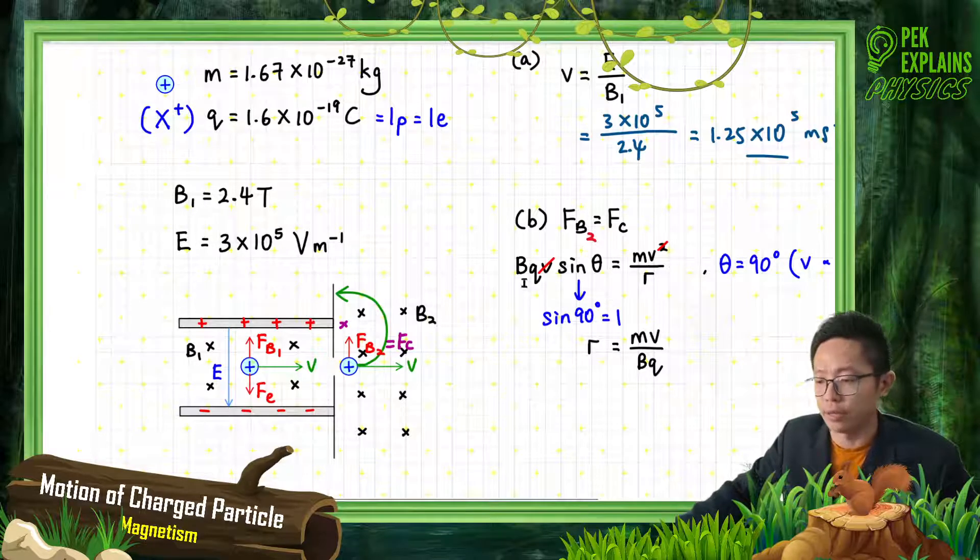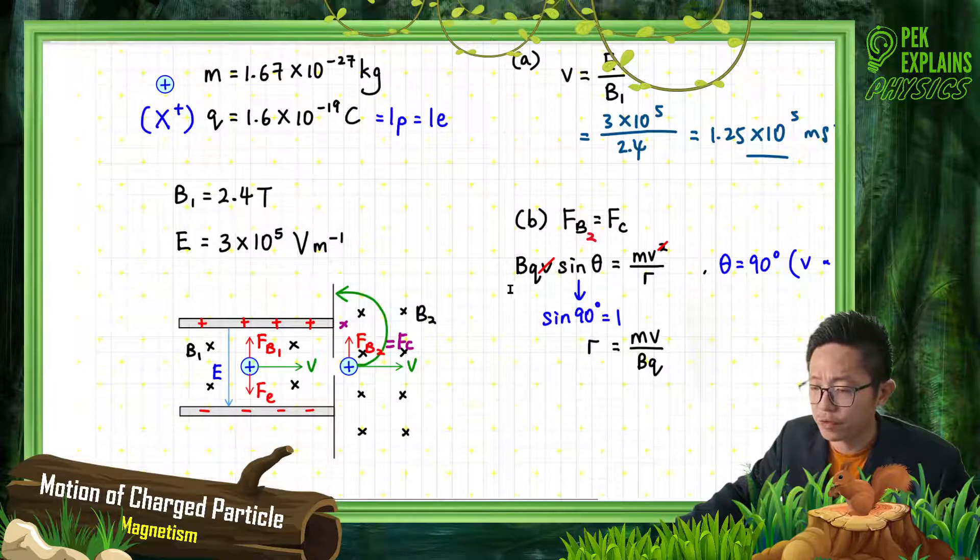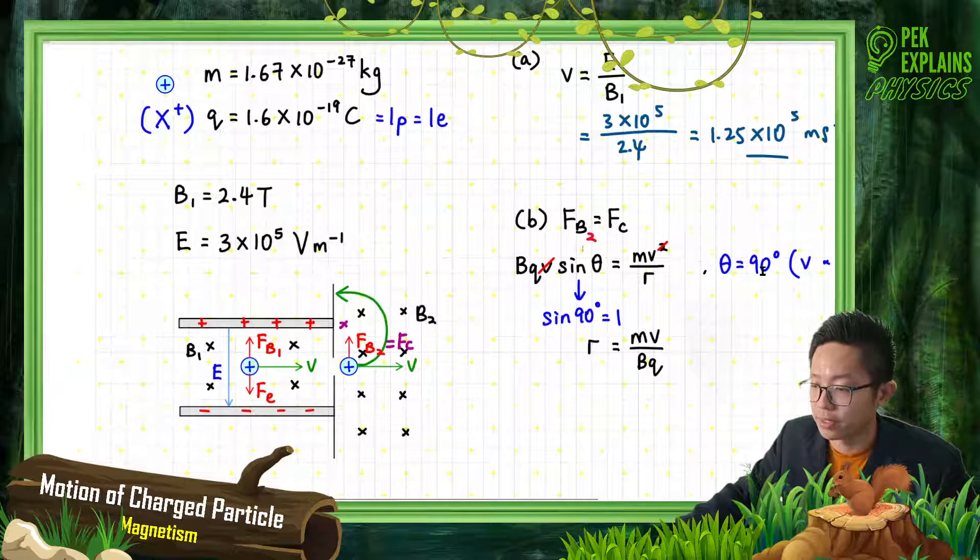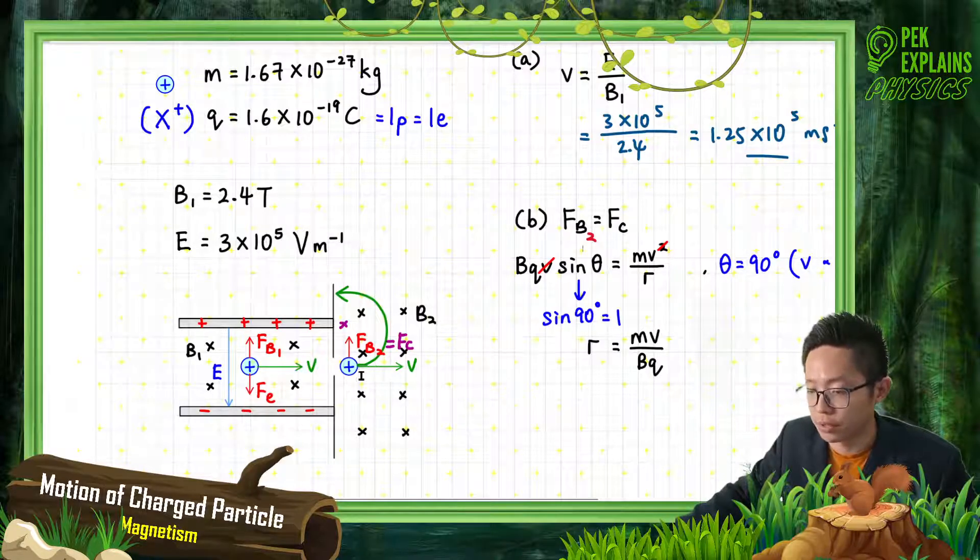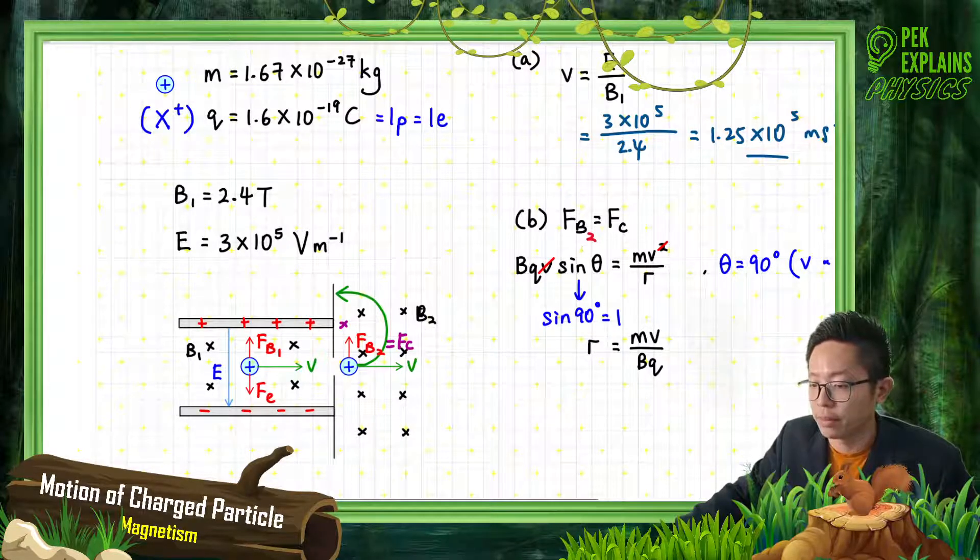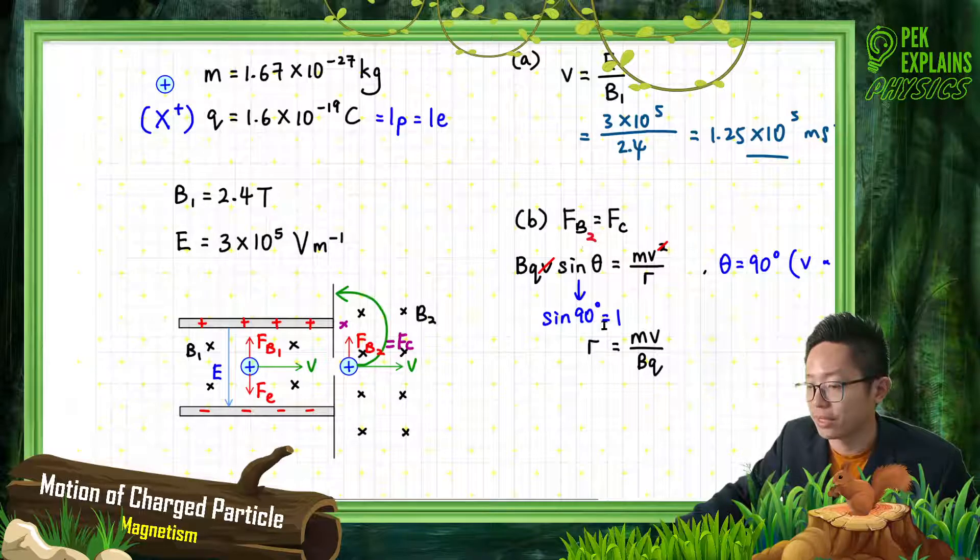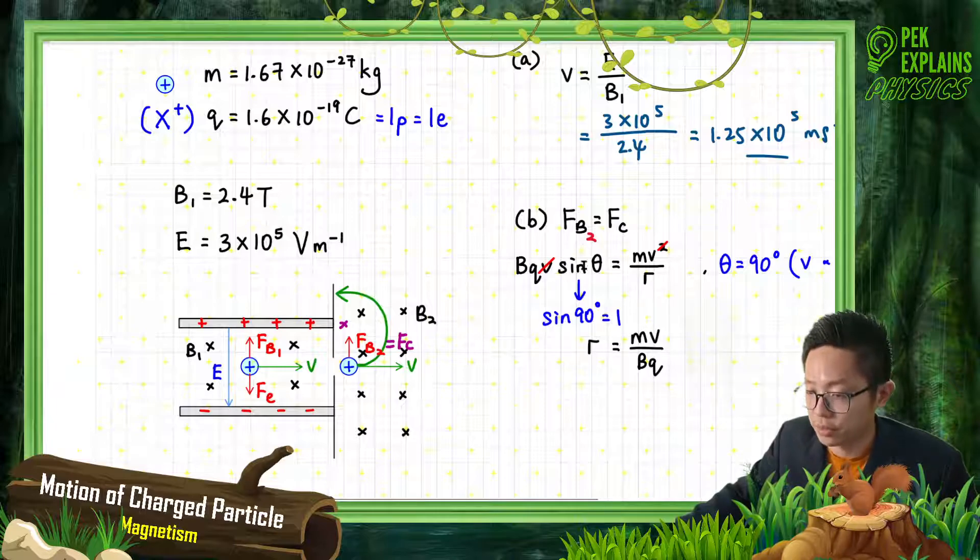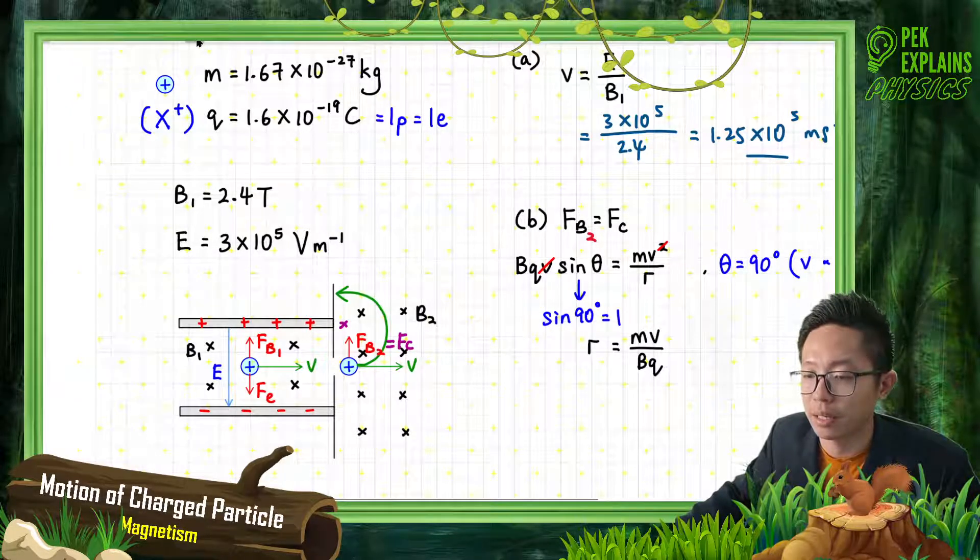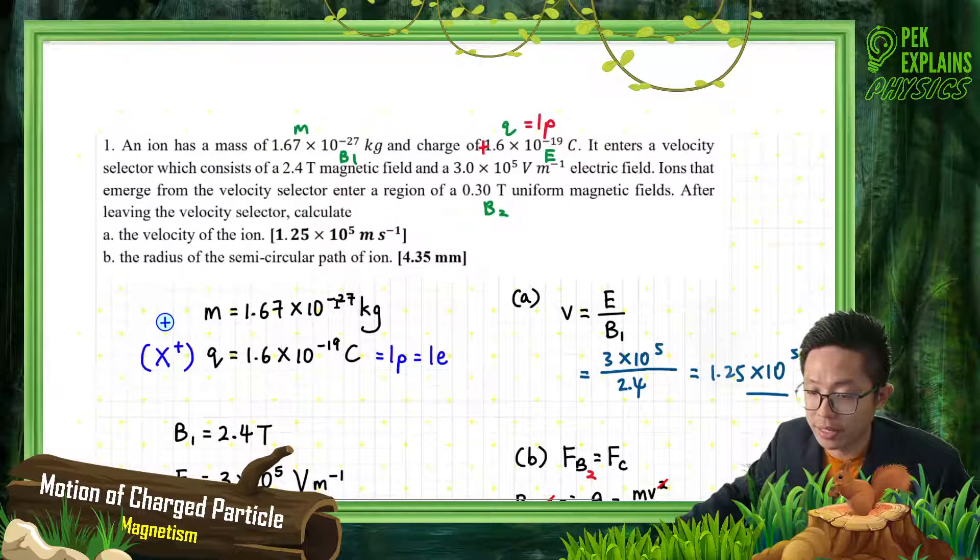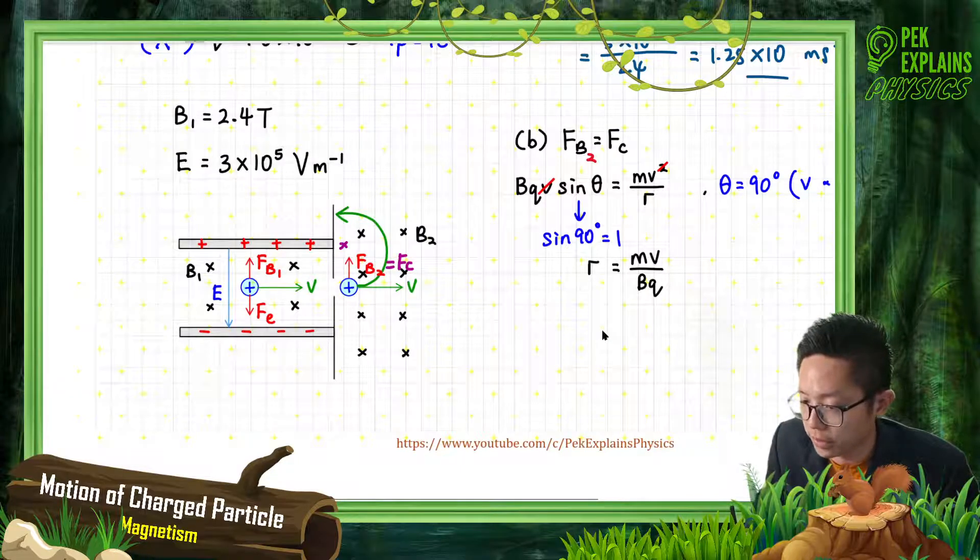Use the formula: magnetic force is Bqv sin theta. Theta is equal to 90 degrees because theta is the angle between velocity and magnetic field, they are perpendicular. So theta equals 90, sin 90 equals 1. Velocity also cut off, that's why we get r equals mv over Bq. Now the question asks for radius, so just substitute everything inside this formula.